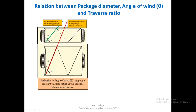After learning how to calculate package density and which parameters affect it, let us see the relation between package diameter, angle of wind, and traverse ratio — three important parameters that keep changing during the build of the package. Looking at this diagram, we see a package growing from empty to full diameter. We observe that the traverse ratio has been kept constant in both cases — it is 1.5 from start to end of the package.